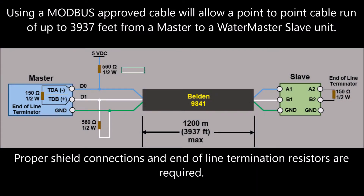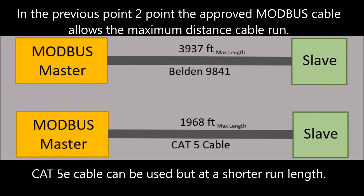Using a Modbus approved cable will allow a point-to-point cable run of up to 3,937 feet from a master to a Watermaster slave unit. Proper shield connections and end-of-line termination resistors are required. CAT-5E cable can be used but at a shorter run length.